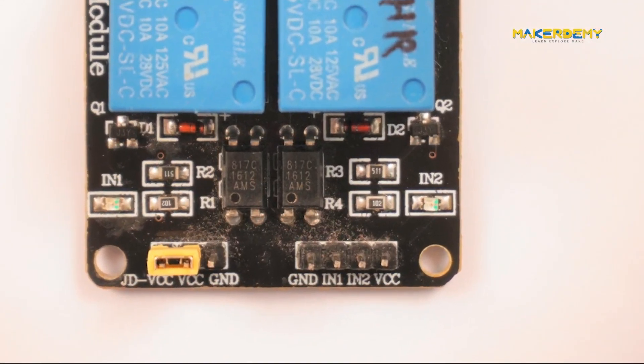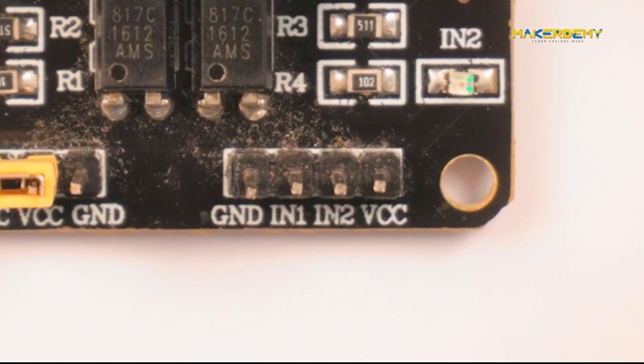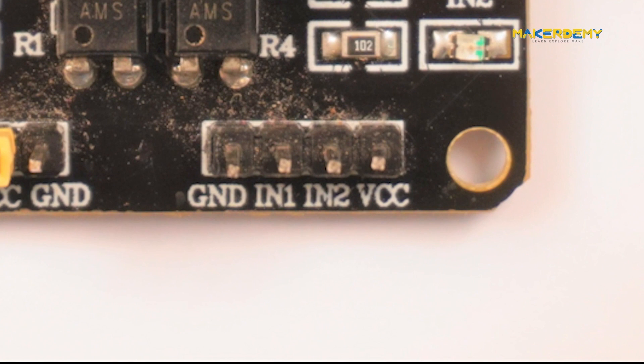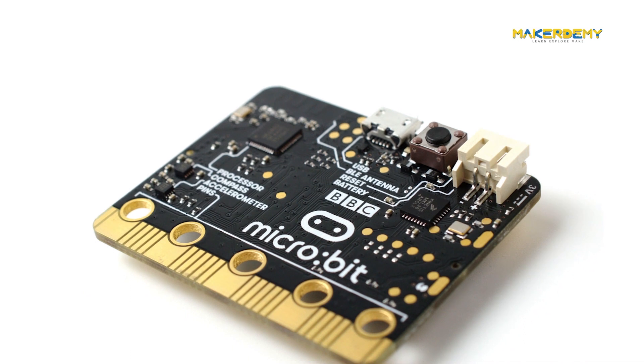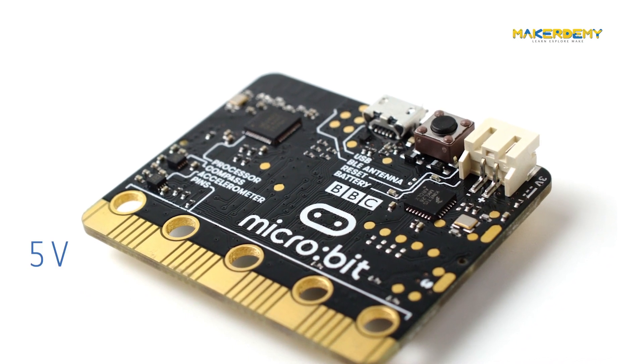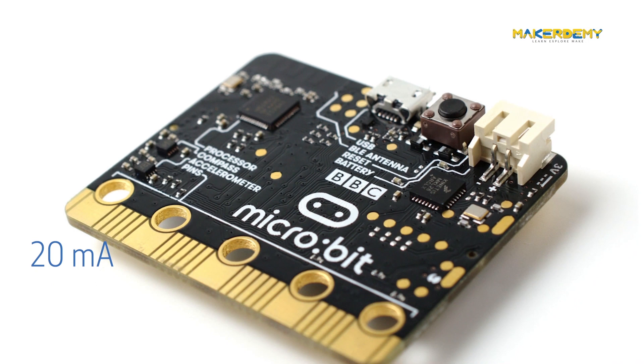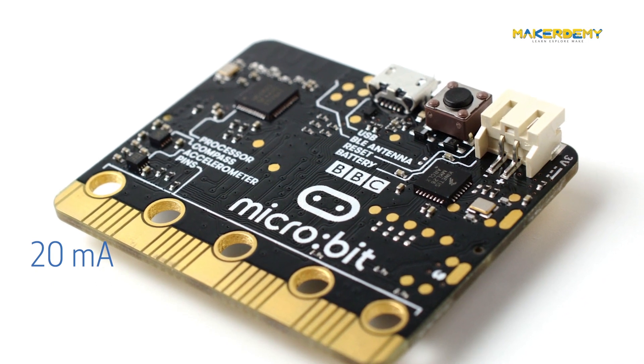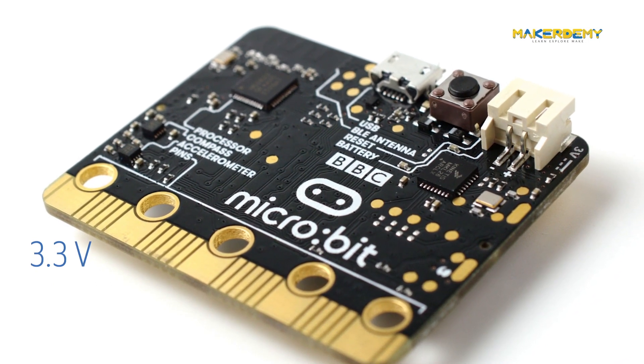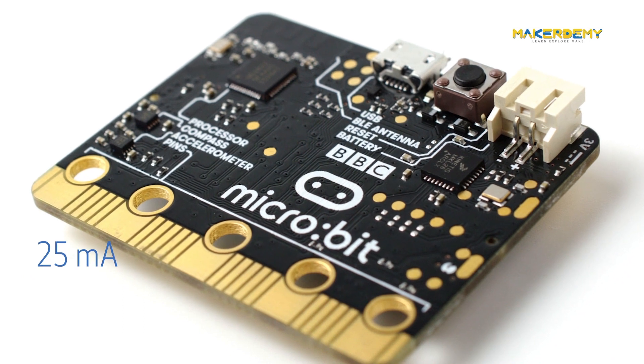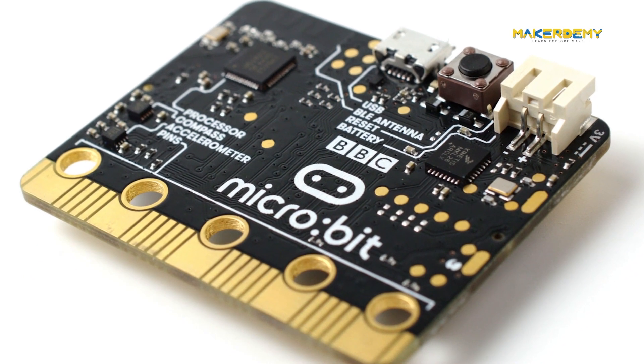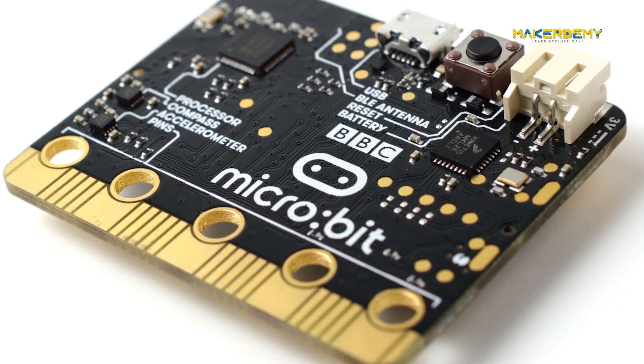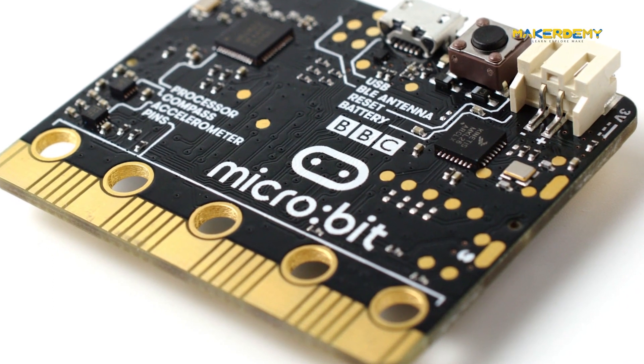Now let's interface the micro:bit with the two-channel relay. The two-channel relay has four pins to interface with micro:bit: VCC, ground, IN1, and IN2. The relay module needs 5V input at the VCC pin and more than 20mA of current to work, but the micro:bit can only provide 3.3V at a maximum of 25mA current. This is why we need an external power supply to provide the obvious deficit in voltage.